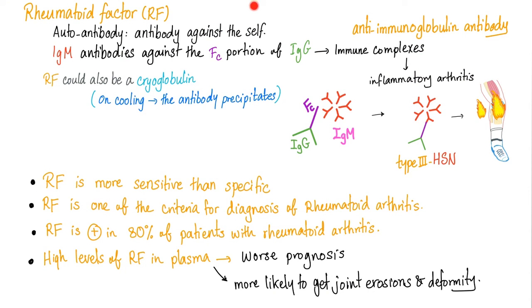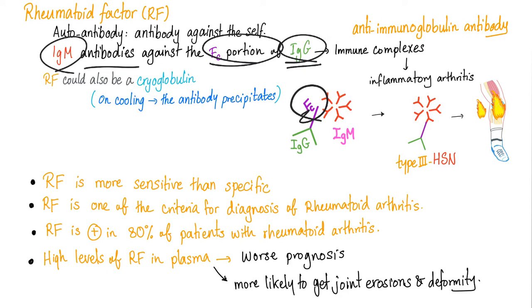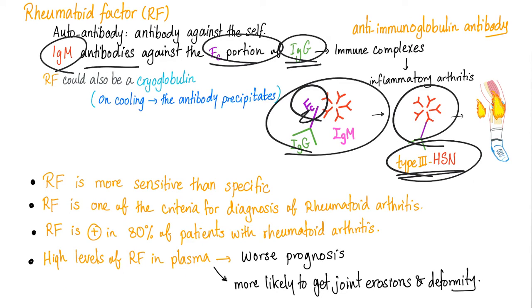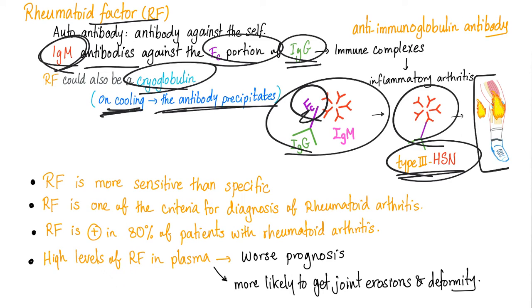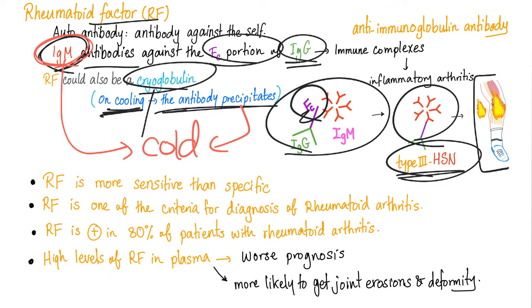ANA are antibodies against the nucleus; ANCA are antibodies against the cytoplasm of neutrophils and monocytes. Rheumatoid factor is an antibody against an antibody — like a dog chasing its tail. It's IgM autoantibodies against the Fc portion of IgG. When they bind together they form an immune complex — a type 3 hypersensitivity reaction — and your joints are on fire. Rheumatoid factor doesn't have to be IgM; it could be IgG, IgA, IgD, or even a cryoglobulin, meaning on cooling the antibody precipitates. IgM and cold go together, just like the cold subtype of autoimmune hemolytic anemia.